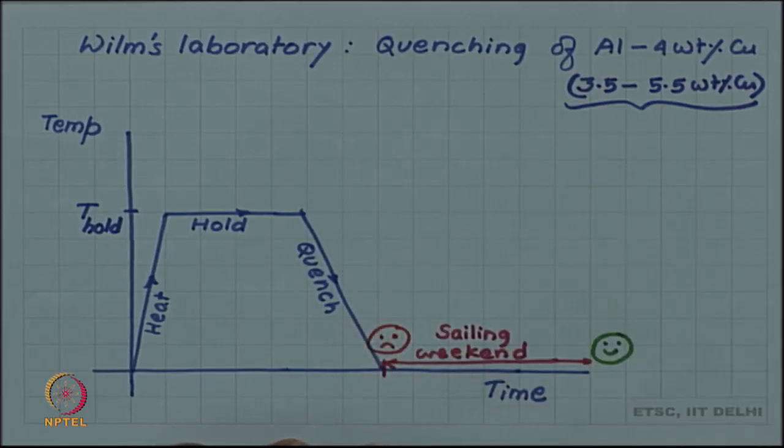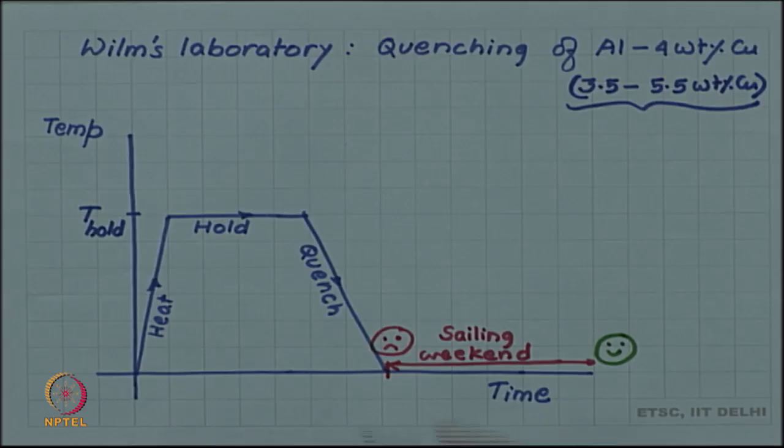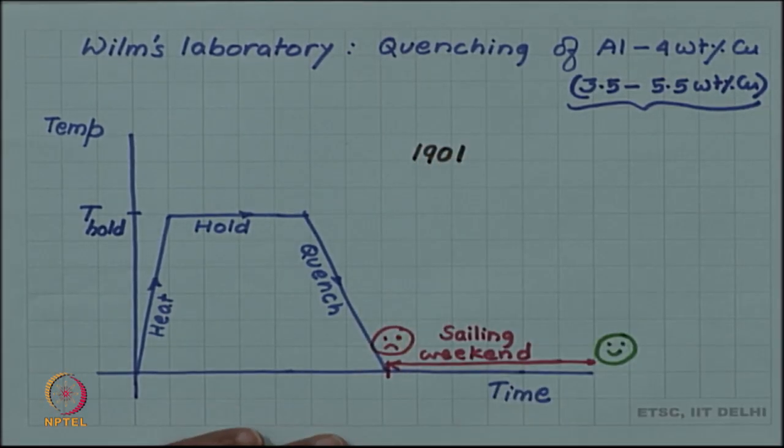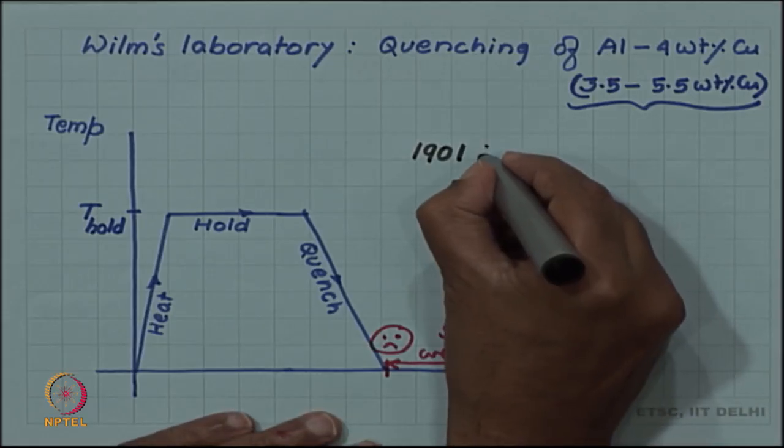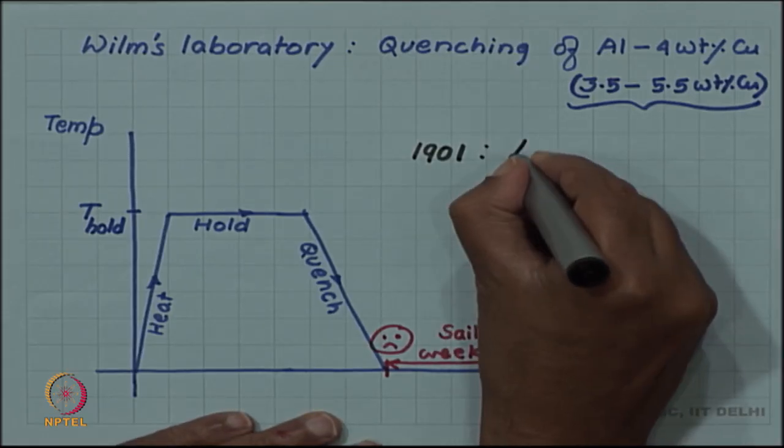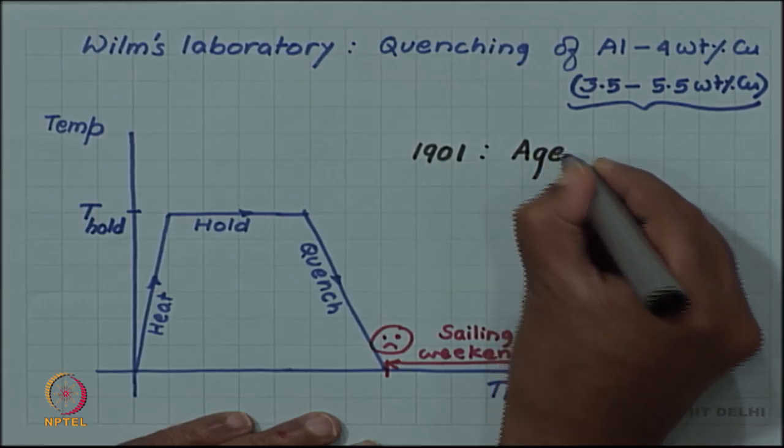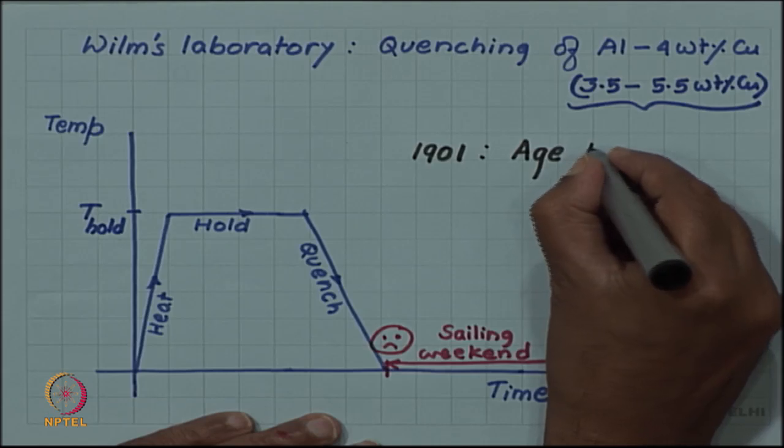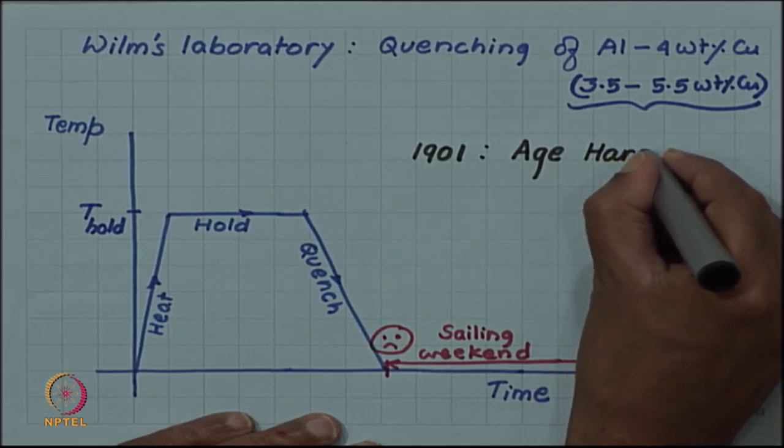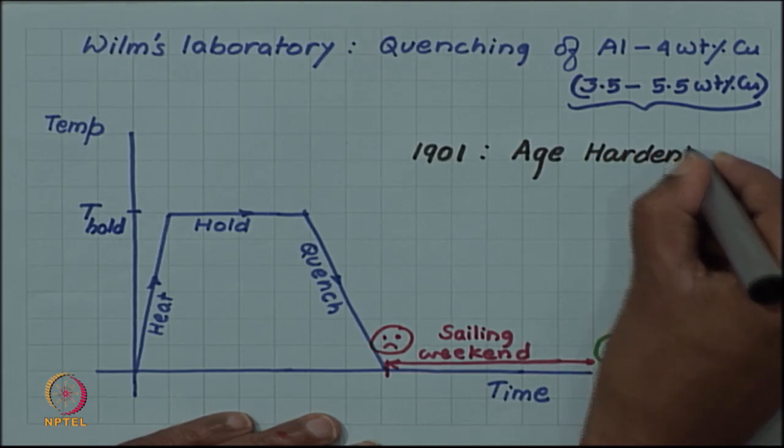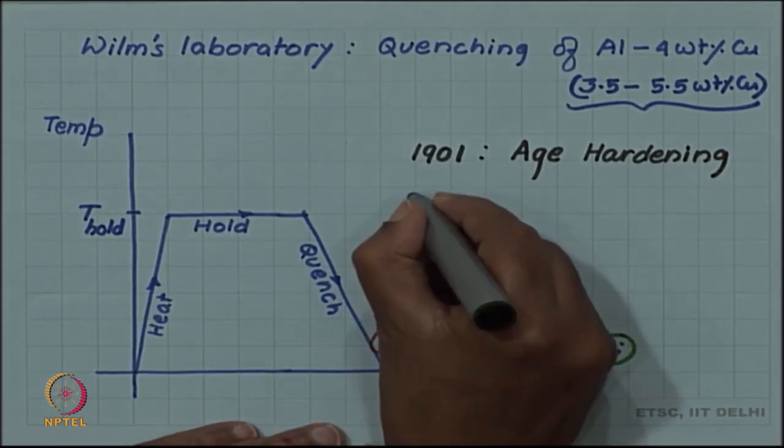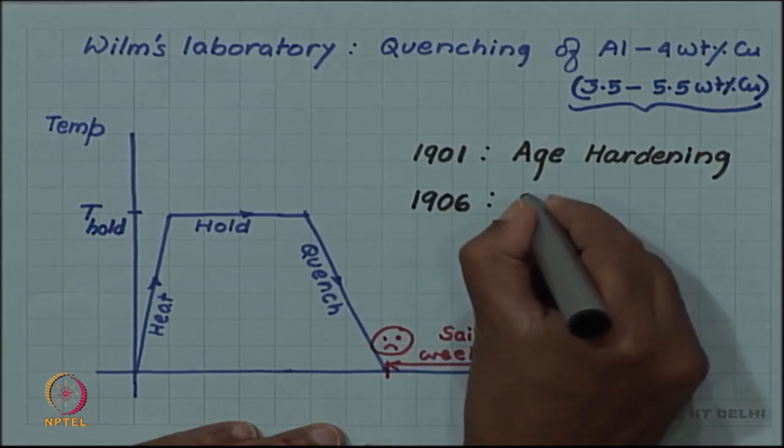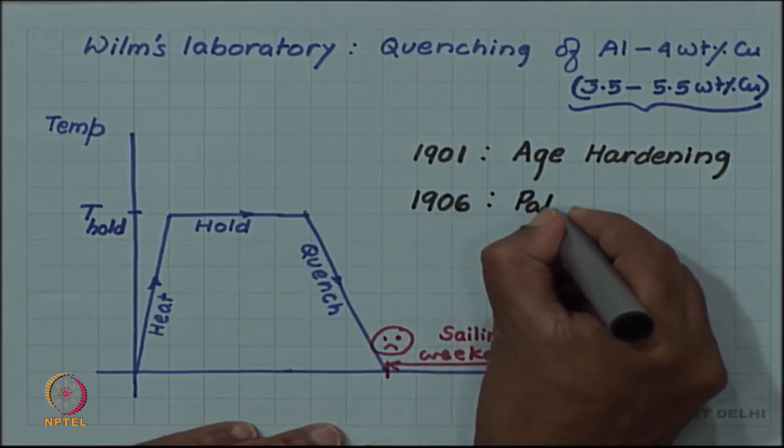This was in 1901. The discovery was in 1901 and he called the process age hardening, he gave the name age hardening, but simply by aging, simply by waiting hardness is increasing. And in 1906, he patented the alloy and the process.